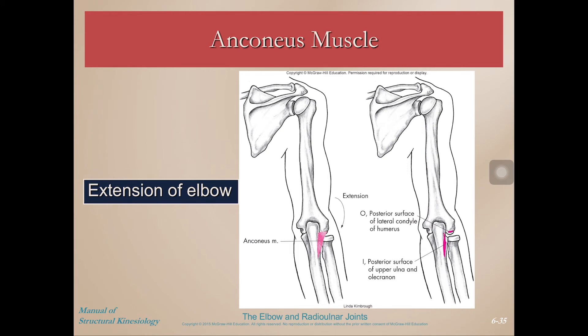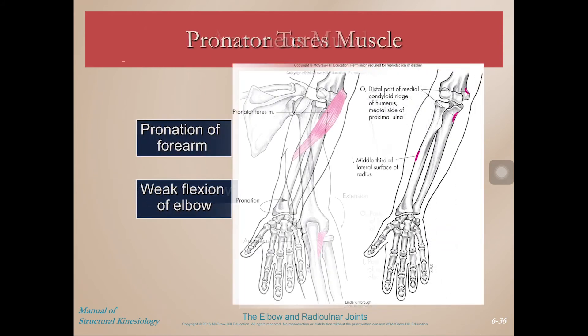And then there's anconeus. Honestly it's probably there for some joint stability at the elbow and maybe some lockout strength, but it's very small so it doesn't contribute very much force to elbow extension.